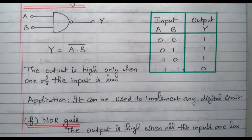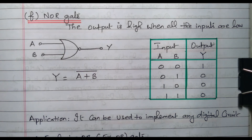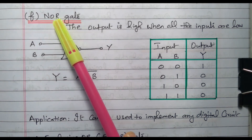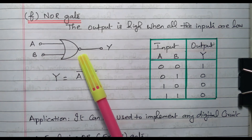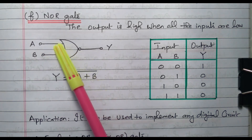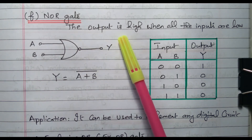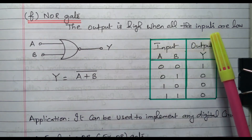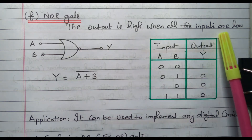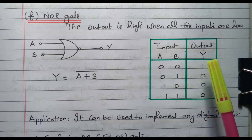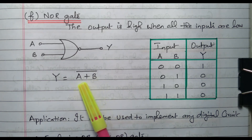Now we will go to the next type: NOR gate. The NOR gate is a combination of OR gate and NOT gate connected in series. This is the symbol — two inputs A and B, output Y. The small circle indicates it is the NOR gate; if the small circle is not there, it is the OR gate. The output is high only when all the inputs are low. The expression is Y = (A+B)̄ — OR gate means A+B, NOR gate means A+B the whole bar.